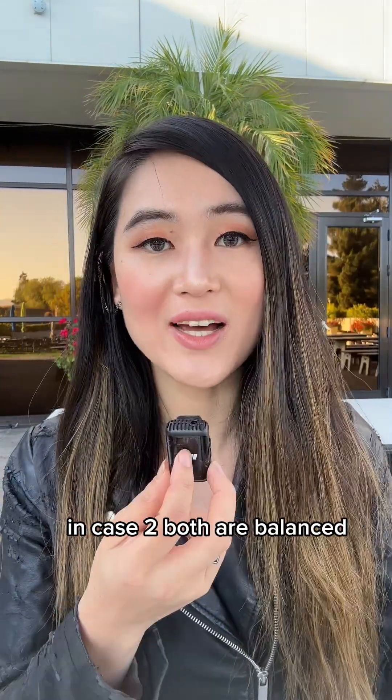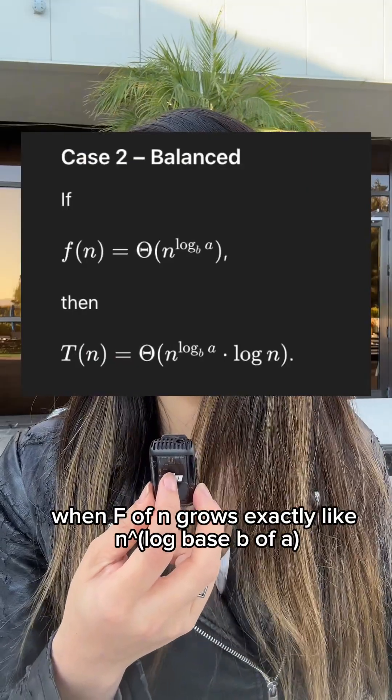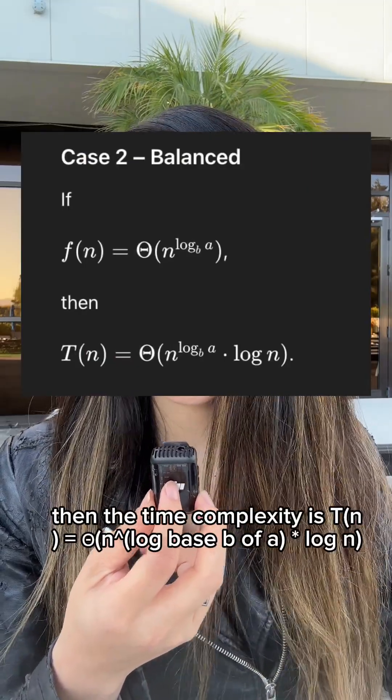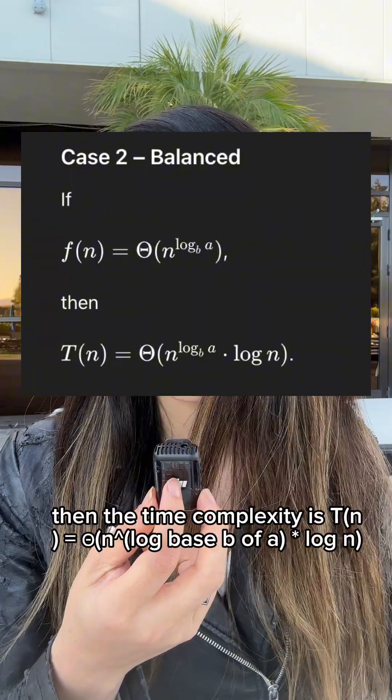In case two, both are balanced. When f(n) grows exactly like n to the power of log base b of a, then the time complexity is theta of n to the power of log base b of a times log of n.